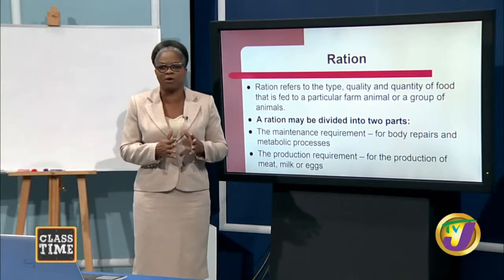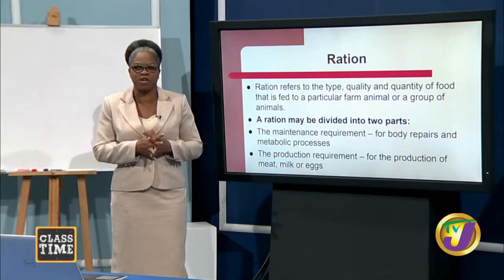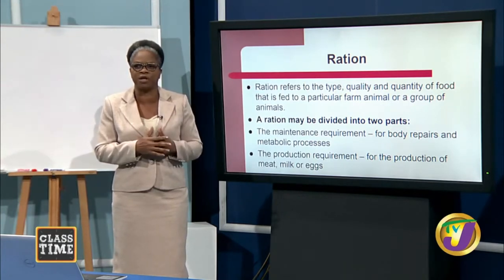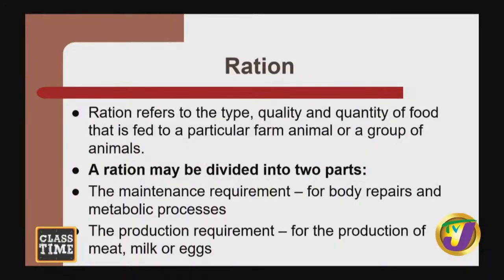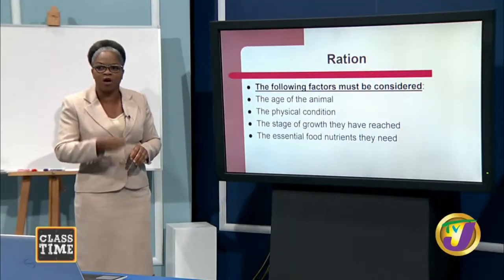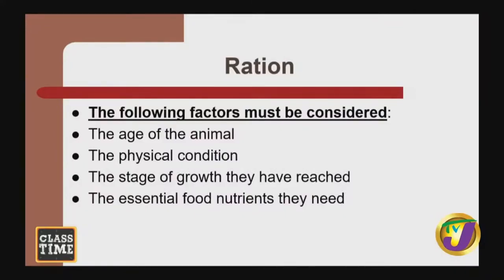When we talk about ration, we are referring to the type, quality, and quantity of food that is fed to a particular farm animal or group of animals. The ration should provide both the maintenance requirement and the production requirement. Before preparing food for animals, we need to consider the age of the animal, the physical condition, the stage of growth, and the essential food nutrients required.